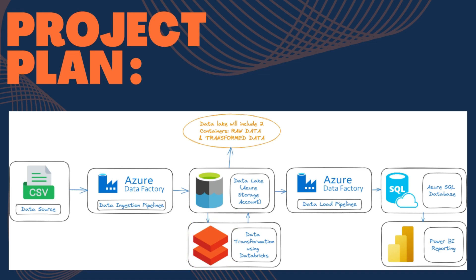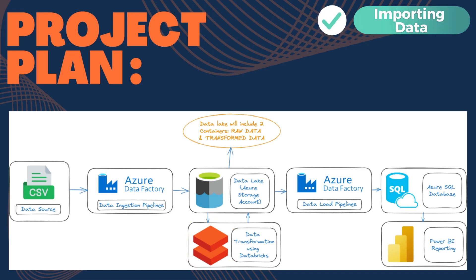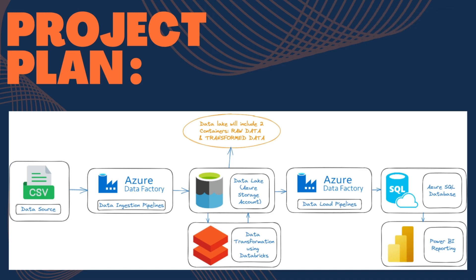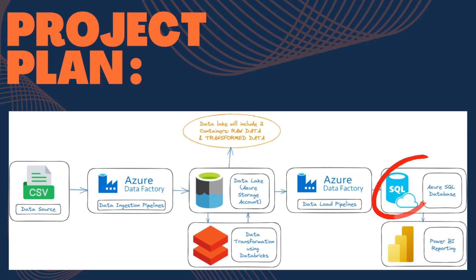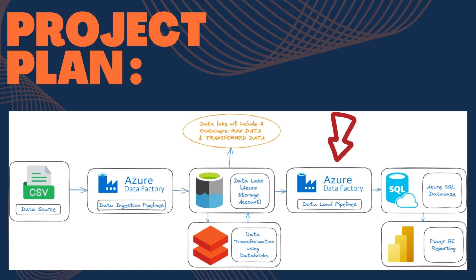This step will involve tasks like importing data into Databricks, removing duplicates, eliminating certain columns, and more. Once our data is primed and transformed, we'll import it back into Data Lake Storage in a container designated for transformed files. Our final destination is an Azure SQL database — we'll start by creating the database, then use Data Factory to set up a pipeline to facilitate the import of our transformed data into the database.